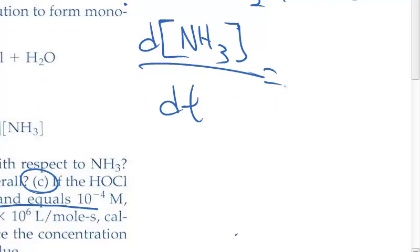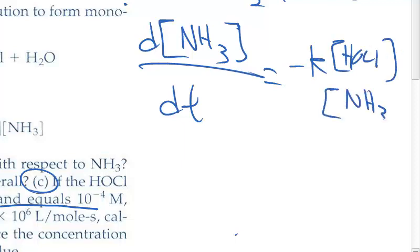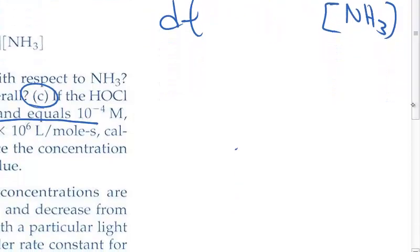This change in ammonia with respect to time is equal to negative K times HOCl concentration times NH3 concentration. If we keep our hypochlorous acid HOCl constant,